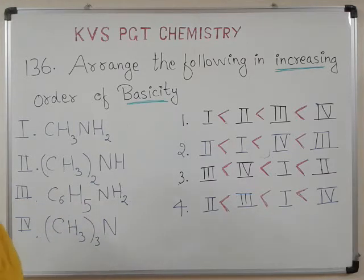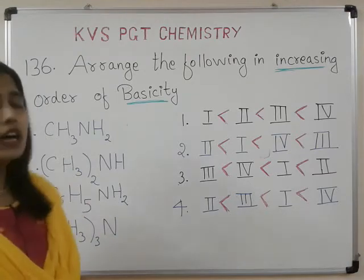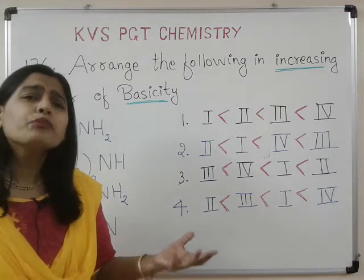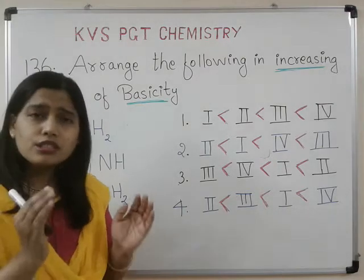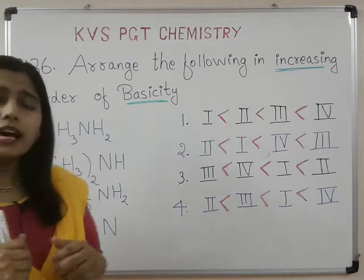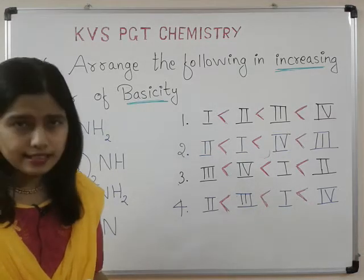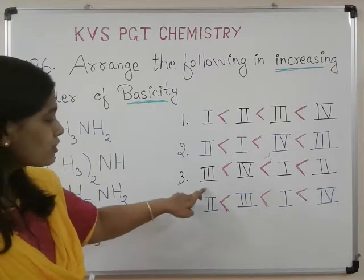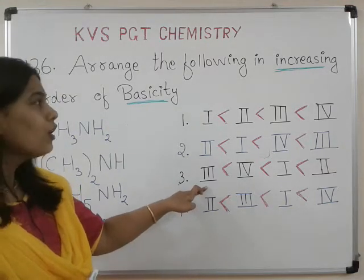The fourth one is a tertiary amine. When I speak about basicity in an aromatic amine C₆H₅NH₂, the aryl group (C₆H₅) shows a −I effect — it has a tendency to withdraw electrons toward itself. As a result, the lone pair of electrons on the nitrogen atom remains unavailable for donation. Therefore, basicity in aromatic amines is less. Structure 3, C₆H₅NH₂ — aniline — is the least basic.